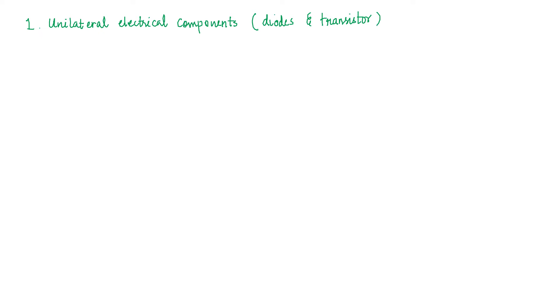Now question arises, what is a unilateral electrical component? So unilateral networks allow the current to flow in only one direction.